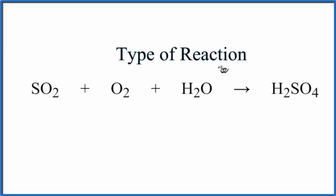In this video, we'll take a look at the type of reaction for SO2 plus O2 plus H2O yields H2SO4. So we're making sulfuric acid here.